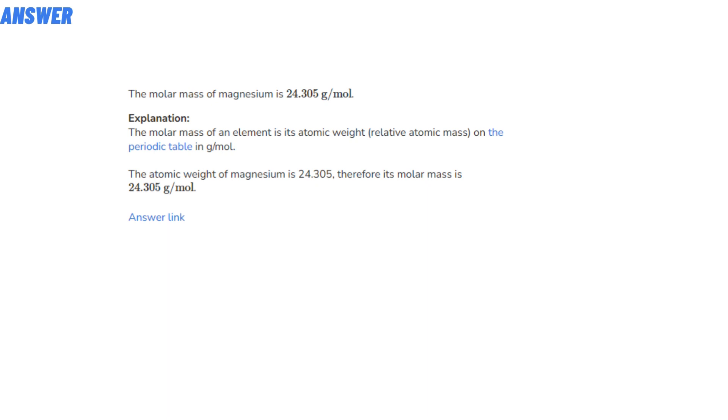The atomic weight is the relative atomic mass on the periodic table in grams divided by mole. The atomic weight of magnesium is 24.305, therefore its molar mass is 24.305 grams divided by mole. So that's the answer of the question.